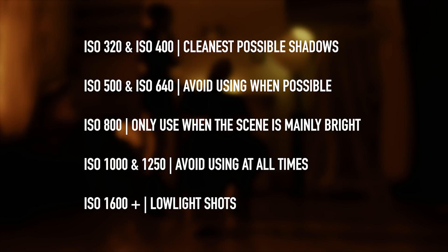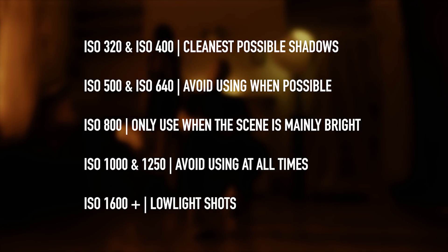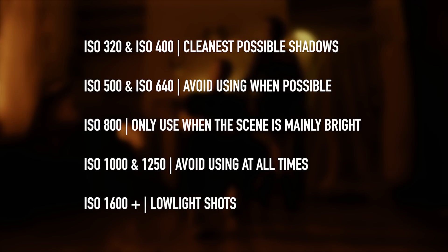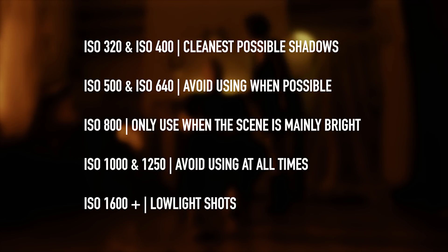For the moment, when selecting ISO I'm going to use ISO 320 or ISO 400 for the cleanest possible shadows. Avoid using ISO 500 and 640 — just use ISO 400 and open the aperture to let in a tiny bit more light. Only use ISO 800 when the scene is mainly bright and you need that extra dynamic range. Avoid ISO 1000 and 1250 at all times, as your image will be much cleaner if you use ISO 1600 and stop down a tiny bit. Use ISO 1600 and above for any low light shots.